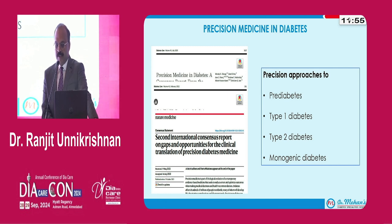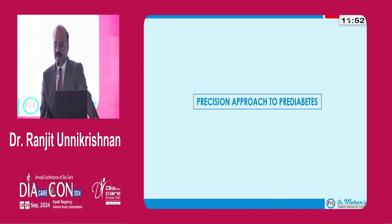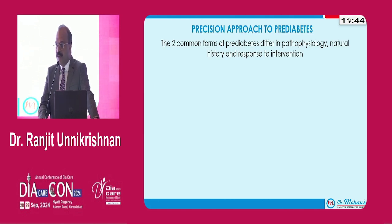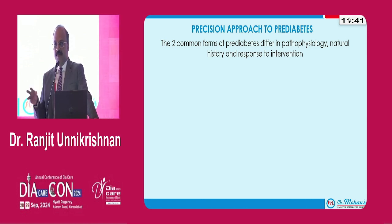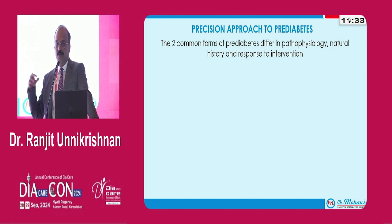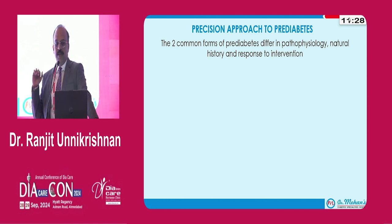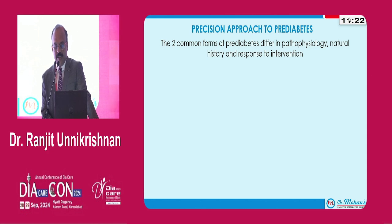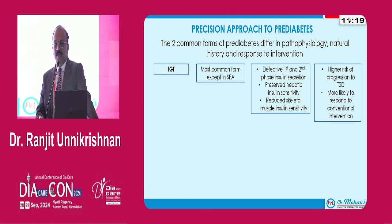How does precision medicine work in somebody with pre-diabetes? We know that pre-diabetes, like type 2 diabetes, is not a homogeneous entity. The most basic way to subdivide individuals with pre-diabetes is based on the pattern of dysglycemia. You can have individuals with impaired fasting glucose (IFG) and individuals with impaired glucose tolerance (IGT), and these two common forms of pre-diabetes differ in physiology, natural history, and response to commonly recommended interventions.